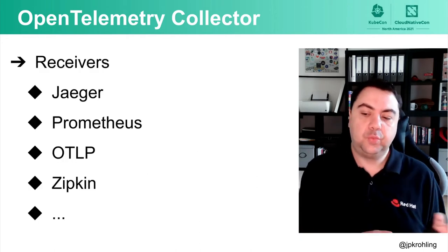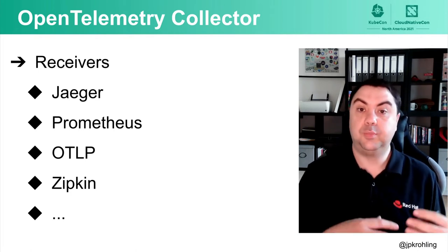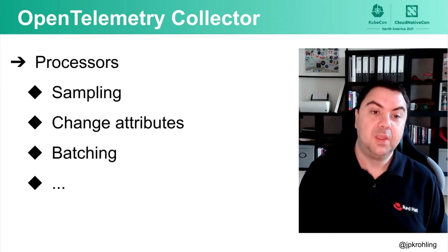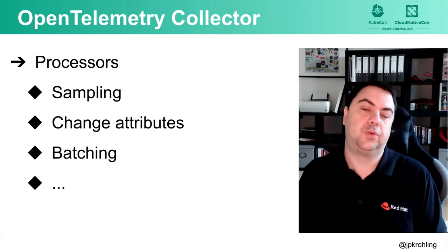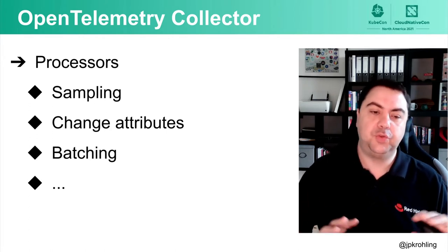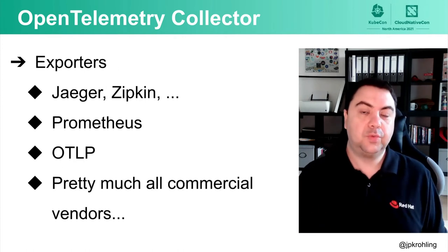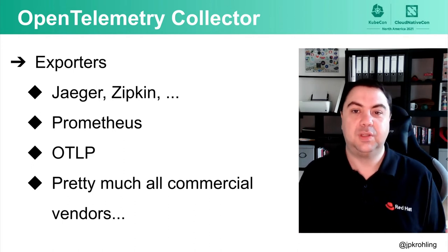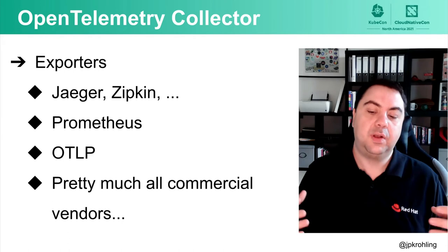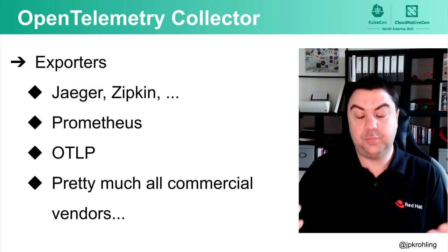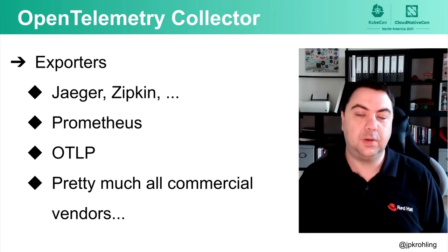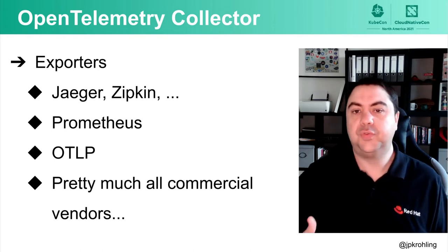Receivers can emulate a Jaeger server, emulate Prometheus behavior, implement OTLP on the server side, or emulate a Zipkin server. Processors might do sampling, change attributes, add or remove attributes from data points, do batching, routing, and so on. When it comes to exporters, we have them for pretty much all relevant systems and vendors — Jaeger, Zipkin, OTLP, a Prometheus-compatible endpoint, and exporters for most commercial vendors.